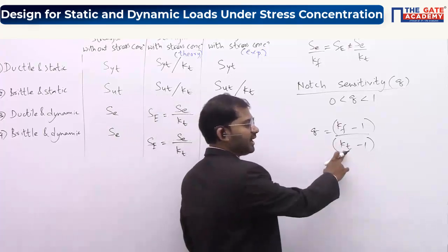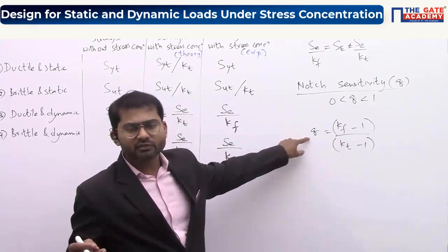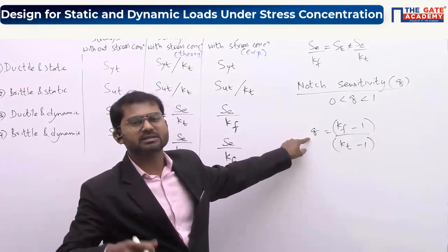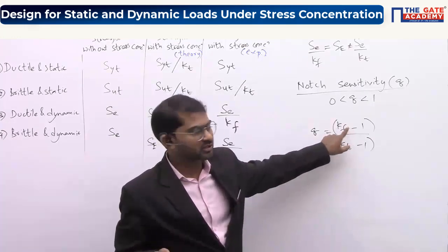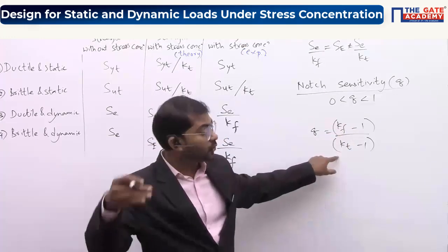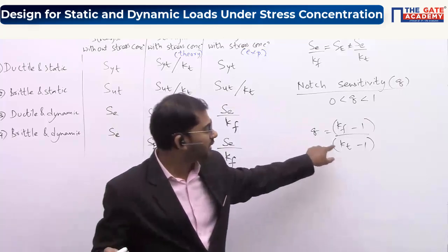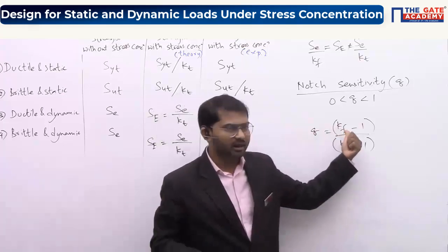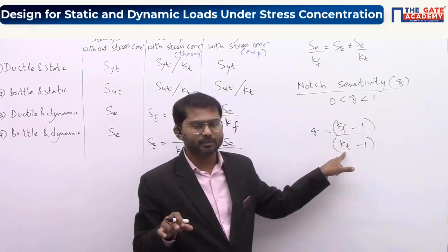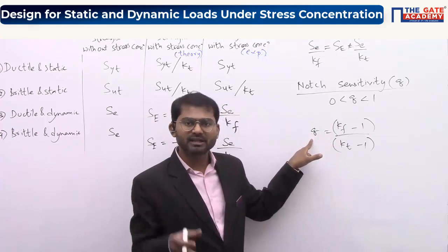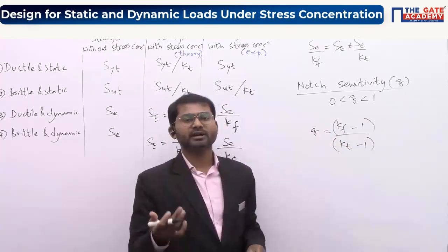In practice, you know KT from photoelastic experiments, and Q is experimentally determined — just like Young's modulus and yield strength. Once you know Q and KT, you can calculate KF using the formula. KF is the stress concentration factor that considers both geometry (through KT) and material (through Q). So KF depends on both dimensions and material, making it a more appropriate stress concentration factor.